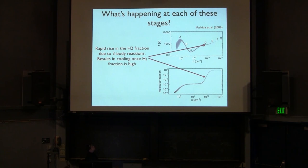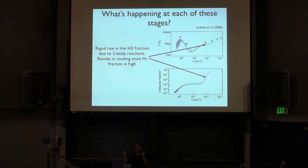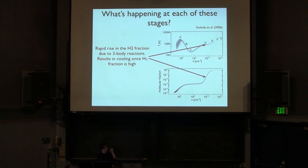At some point there is a very dramatic rise in the H2 fraction. The density and temperature become high enough that three-body reactions — involving three hydrogen atoms, or H2 plus two hydrogen atoms — are able to create H2 very, very effectively. They manage to convert almost all the hydrogen into H2 within a couple of decades in density — a very rapid change. With that huge amount of H2, the gas can then cool again much more effectively, which is why you see a plateau in the temperature curve.